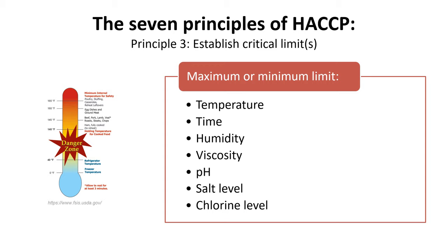Principle 3: Establish critical limits. A critical limit is a maximum and/or minimum value to which a biological, chemical, or physical parameter must be controlled at a CCP to prevent, eliminate, or reduce to an acceptable level the occurrence of a food safety hazard. For example, establishing a maximum or minimum limit for temperature, time, humidity, viscosity, pH, salt level, chlorine level, or other processing characteristic that will control the hazard. This is the critical limit for the CCP. If this limit is ever exceeded, corrective action must be taken and all affected product controlled. Your next step is to establish criteria for each critical control point — what criteria must be met to control the hazard at that point? Is it a minimum temperature? Are there regulatory limits that you must meet for this control point?